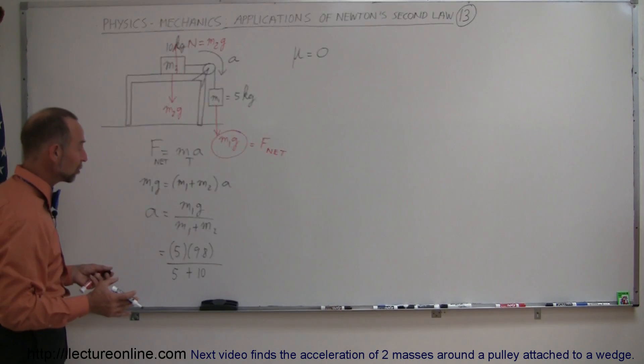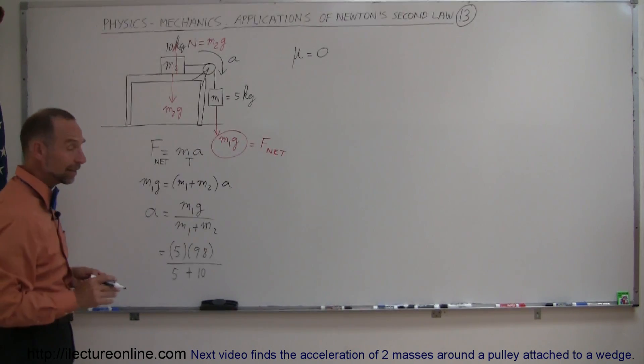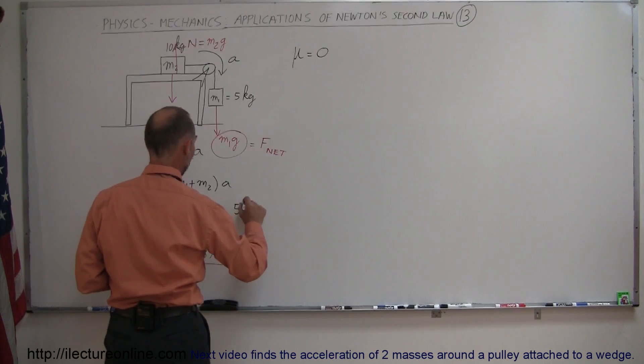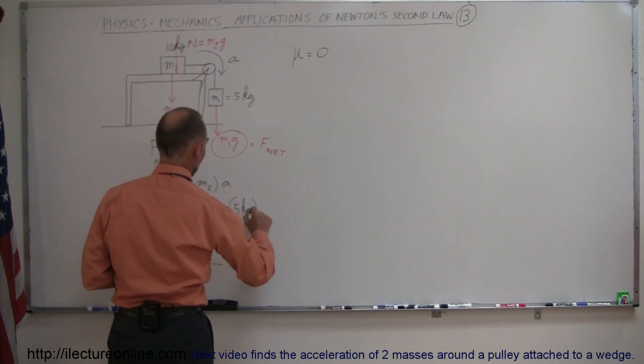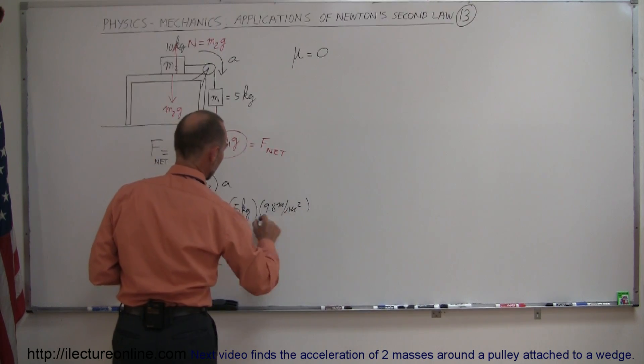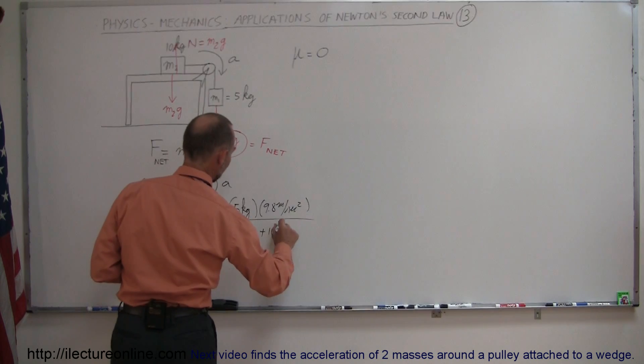Now I left off the units, why do I do that? It makes it a lot cleaner. If you don't like that, what you could do is say, okay, plug in the units, so you have 5 kilograms times 9.8 meters per second squared, divided by 5 kilograms plus 10 kilograms.